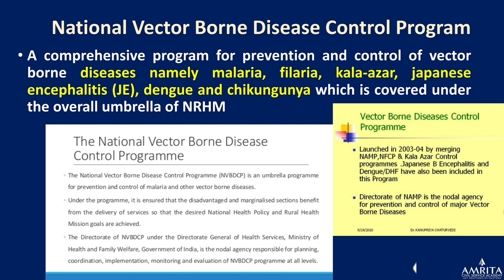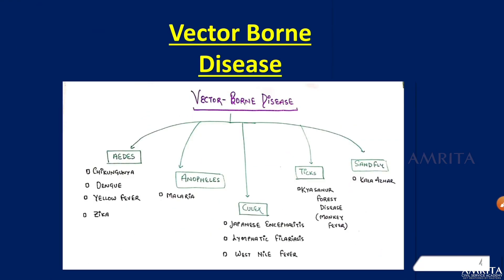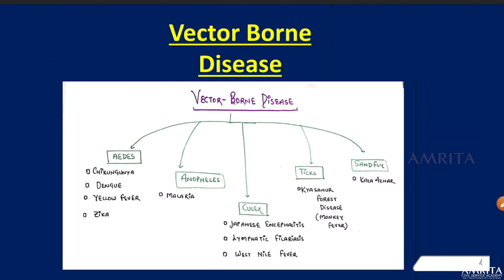The National Vector-Borne Disease Control Program was launched in 2003-04 and covers diseases such as malaria, filaria, kala-azar, Japanese encephalitis, dengue, and chikungunya under the National Rural Health Mission. The responsible agency is the Directorate of the National Vector-Borne Disease Control Program.